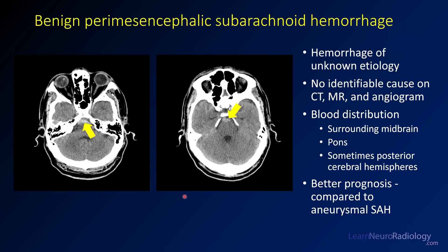Finally, there's benign perimesencephalic subarachnoid hemorrhage — an isolated cause of SAH of unknown etiology, predominantly centered in the basal cisterns and anterior to the pons in the perimesencephalic cisterns. These patients will have a negative workup on CT angiogram and MR angiogram because there is no underlying arterial cause. These are thought to be from venous tears.